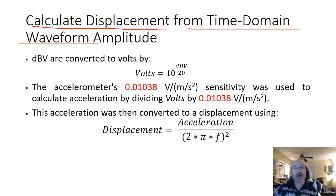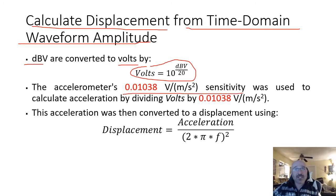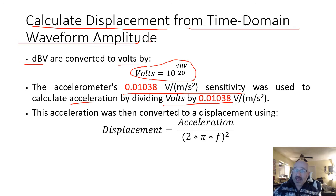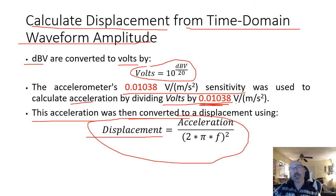For our key equations: to calculate displacement from time domain waveform amplitude data, we first convert decibels into volts using the standard relationship. Then the accelerometer's sensitivity is used to calculate acceleration by dividing volts by the sensitivity factor — information we can get from the manufacturer, or calculate from tests with older accelerometers. This acceleration is then converted to displacement using: displacement = acceleration / (2π × frequency)².